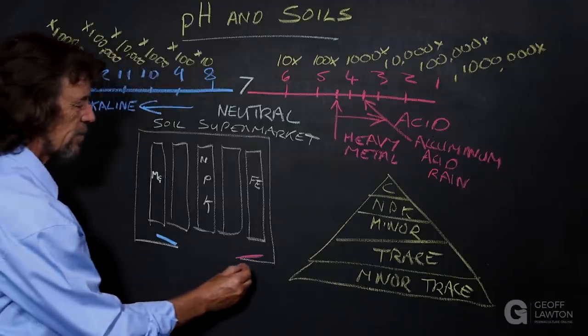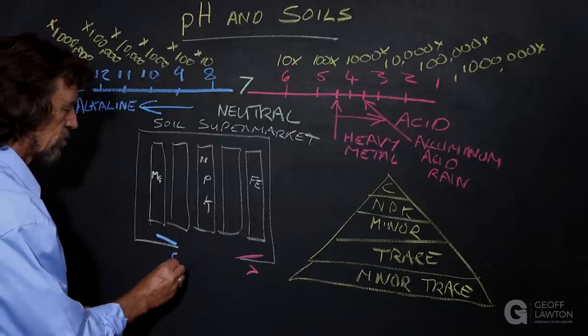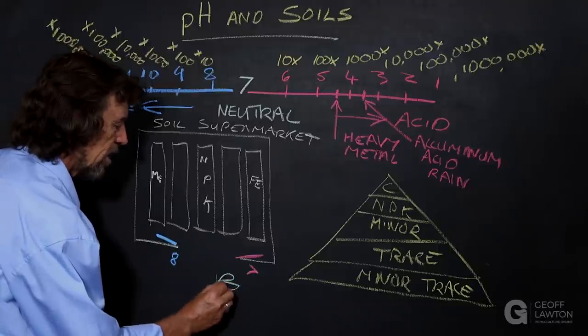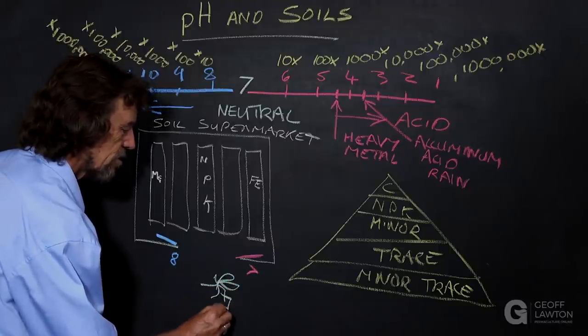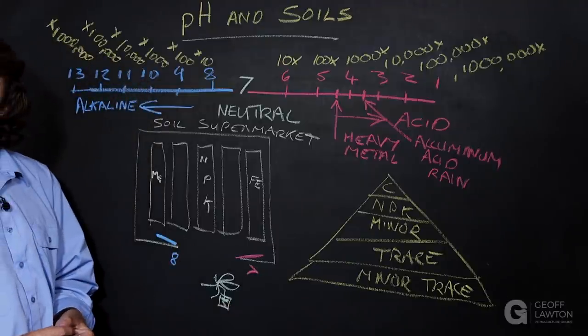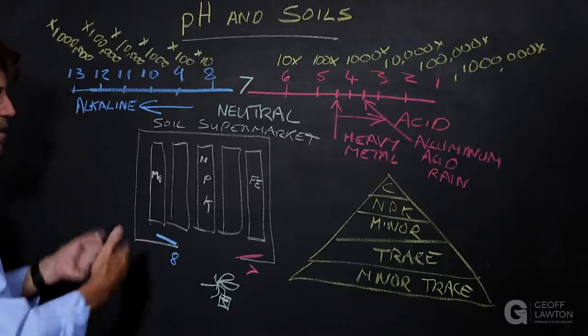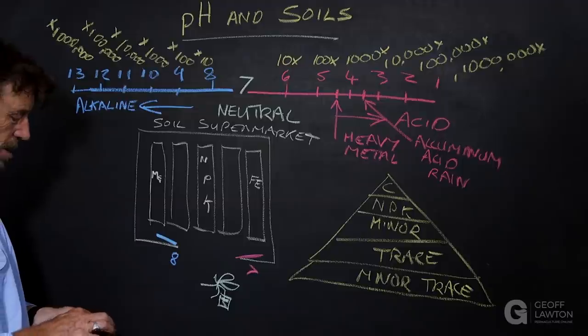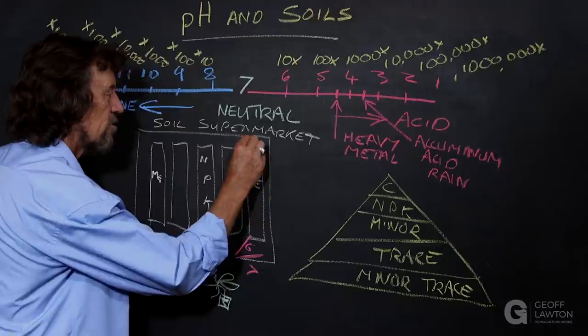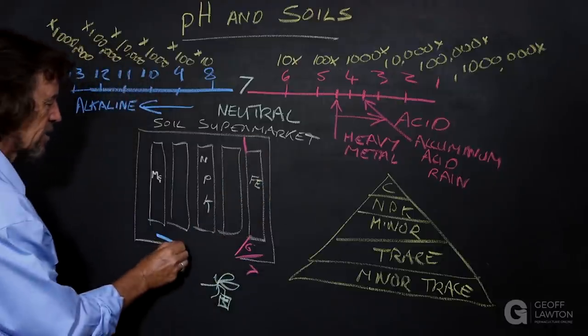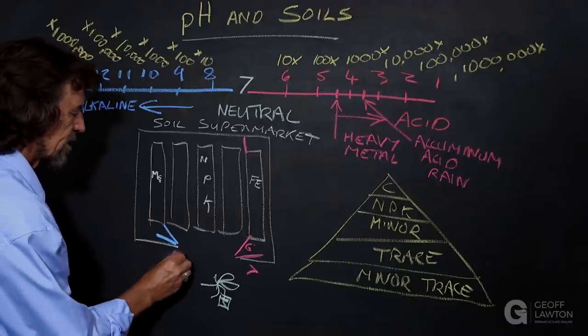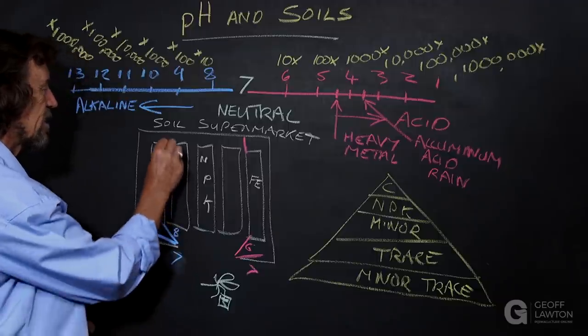pH would be the doors of the supermarket. And this would be pH 7. Doors are open, elements for sale. And here, the shoppers are the plants. They're coming in with their little recycled green shopping bags to go and get what they need. They're hungry for certain elements. They're coming into the soil supermarket shop. But if it goes to pH 6, this aisle closes. And if it goes to pH 8, this aisle closes.